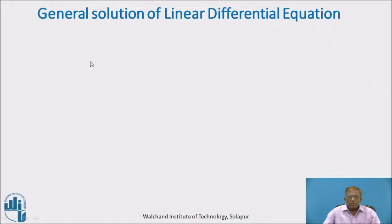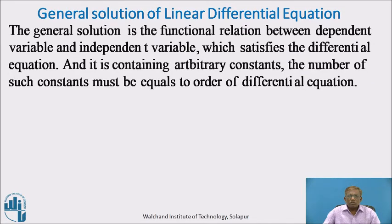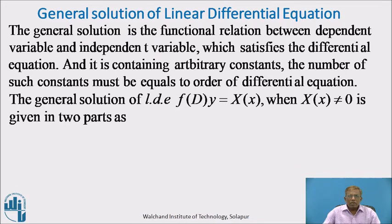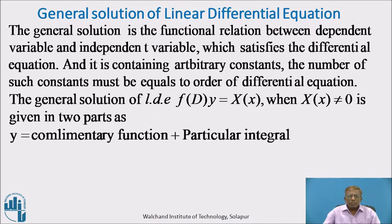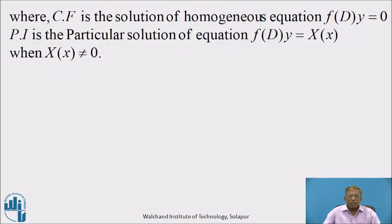Now, the general solution of a linear differential equation: the general solution is the functional relation between the dependent variable and the independent variable which satisfies the differential equation, and it contains arbitrary constants. The number of such constants must be equal to the order of the differential equation. In general, the solution of f(D)·y equals X(x) with constant coefficients, when X(x) is not equal to 0, is expressed in two parts: y equals complementary function plus particular integral, written as y = CF + PI, where CF is the solution of the homogeneous equation f(D)·y equals 0, and PI is the particular solution of f(D)·y equals X(x).